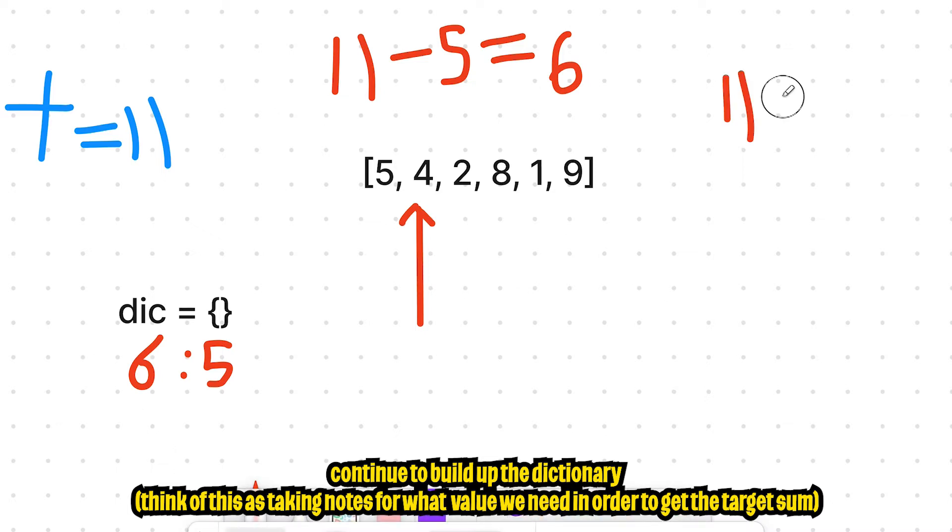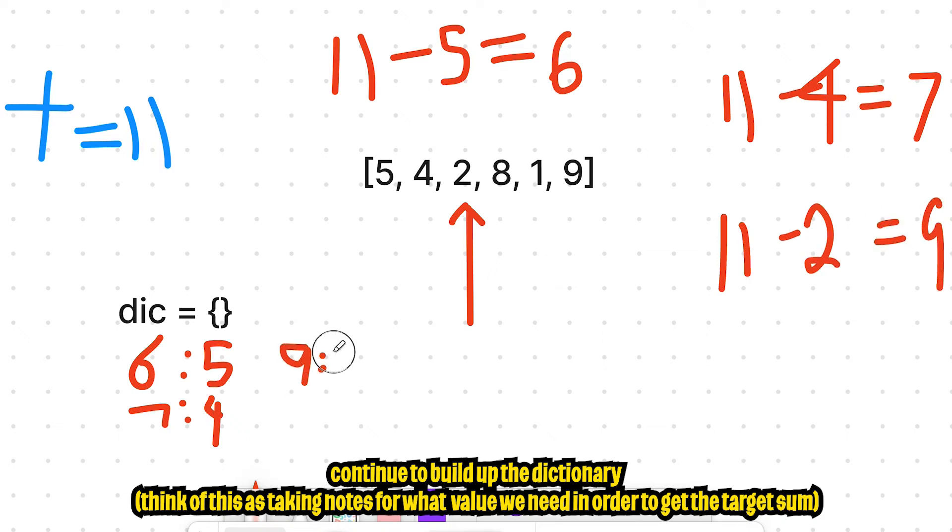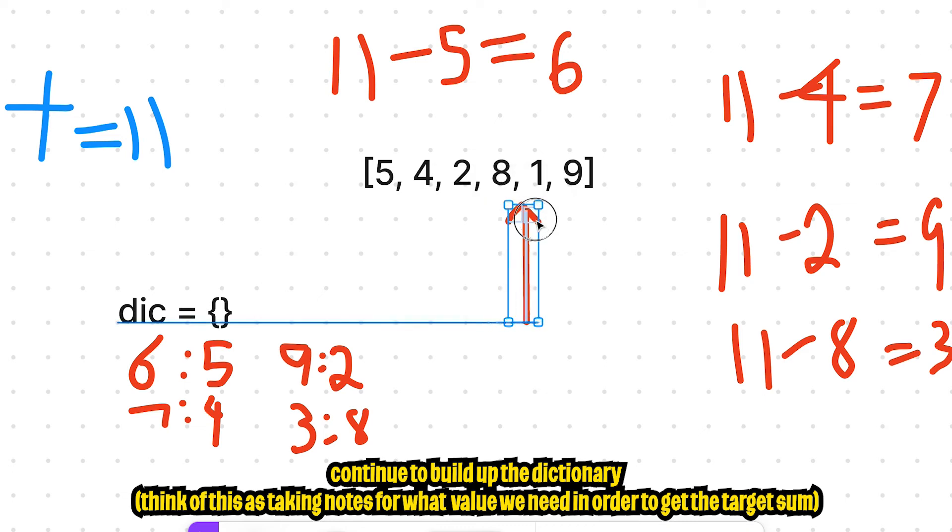So next we see four. So 11 subtract four will give us seven. So now I put seven and four. And then we see a two. So 11 subtract two will give us nine. So now we put two and nine. And then we move forward. And then here we get an eight. So now 11 subtract eight will give us three. So now we get three and eight. And then we have one. So 11 subtract one will give us 10. So now we have 10 and one.